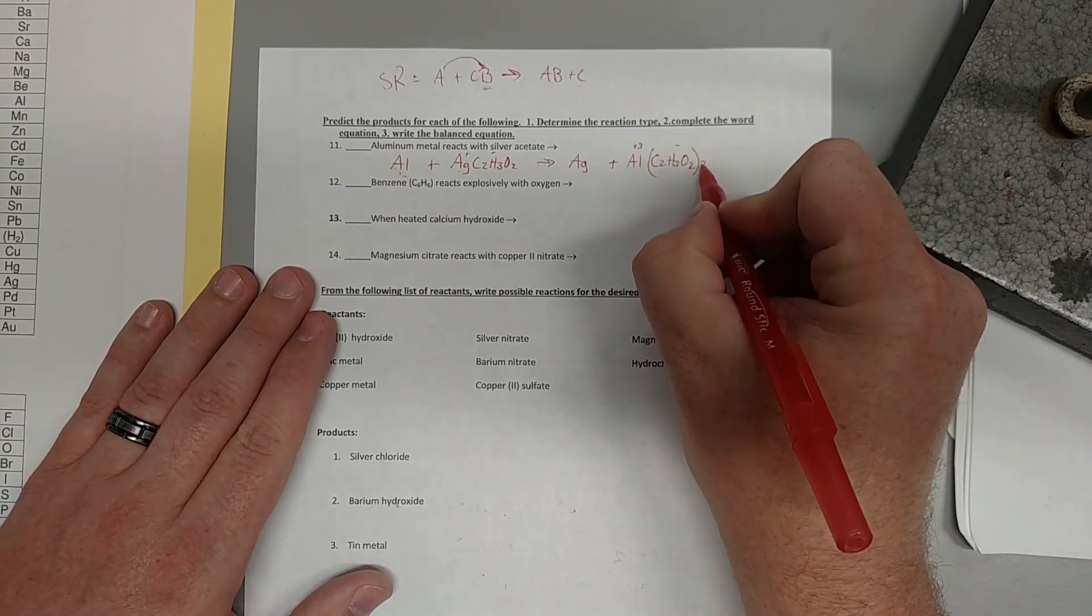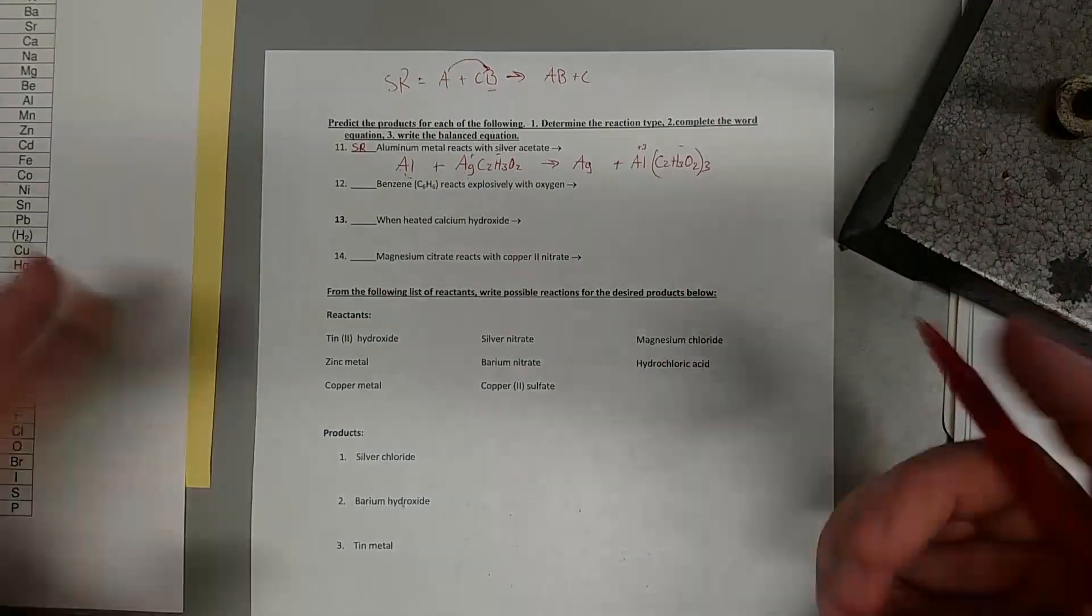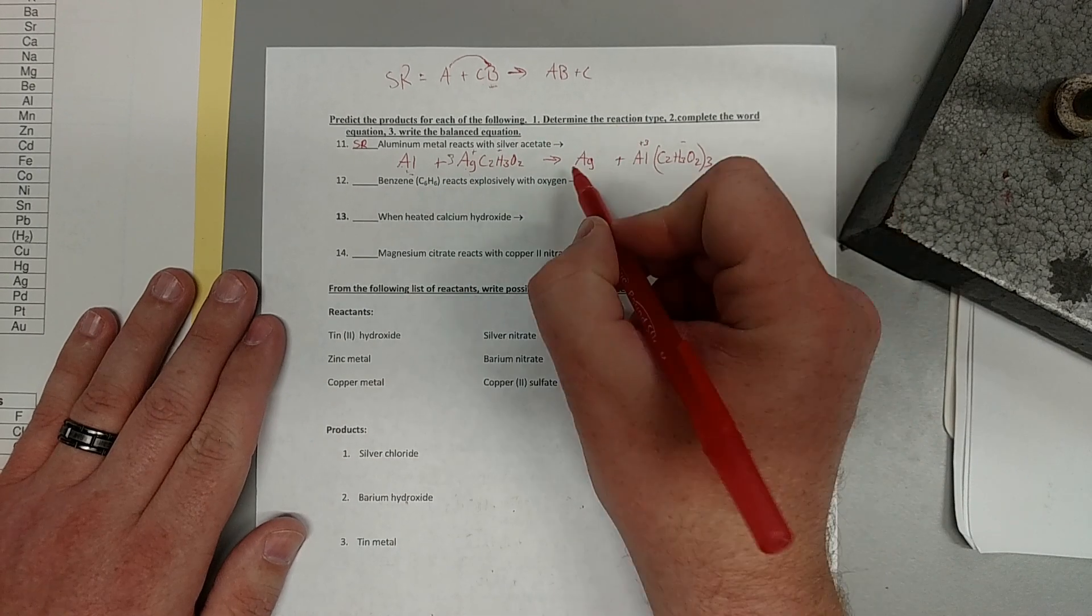So we write a three. Single replacement. So now that we have that, we can balance it out. So we need a three here and a three there.